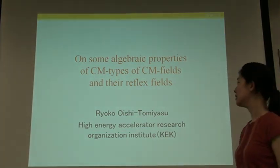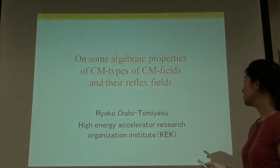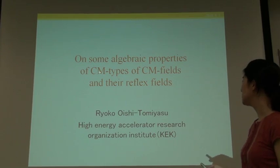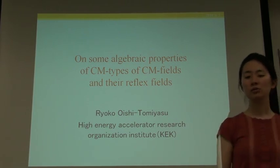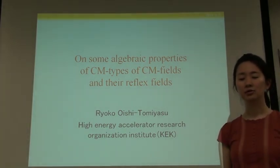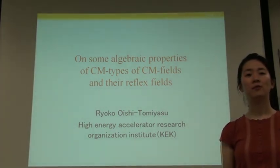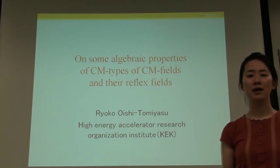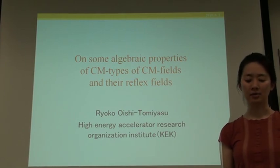This is the title of my paper: On Some Algebraic Properties of CM-types of CM-Fields and their Reflex Fields. I'd like to talk about algebraic structures that were discovered when theory of elliptic curves with complex multiplication was extended to higher dimensions.